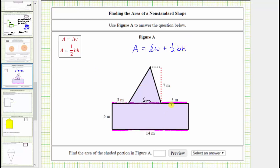Going back to the polygon, notice how the length of the rectangle is 14 meters, the width is 5 meters. Looking at the triangle, the base is 6 meters and the height is 7 meters. This is all the information that we need.